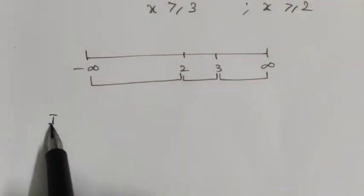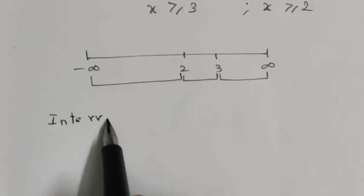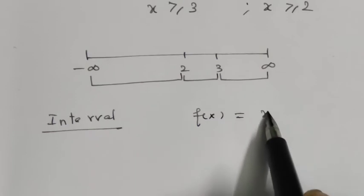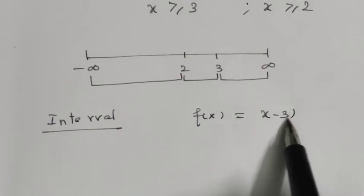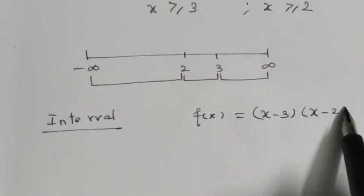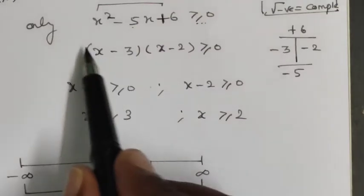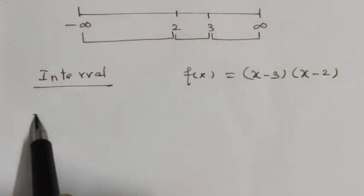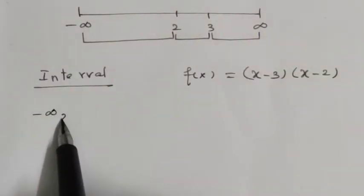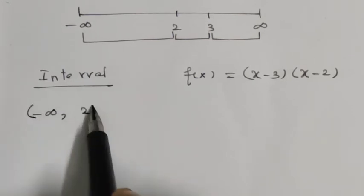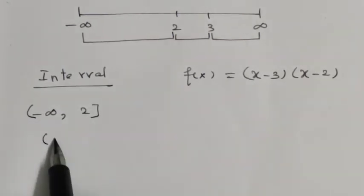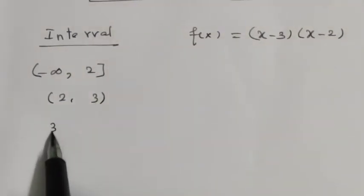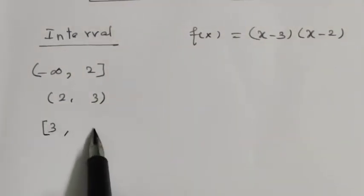Let's take a sign table. The interval column and f(x) column — where f(x) equals x minus 3 into x minus 2. The intervals are: first, minus infinity to 2; second, 2 to 3; and third, 3 to infinity.